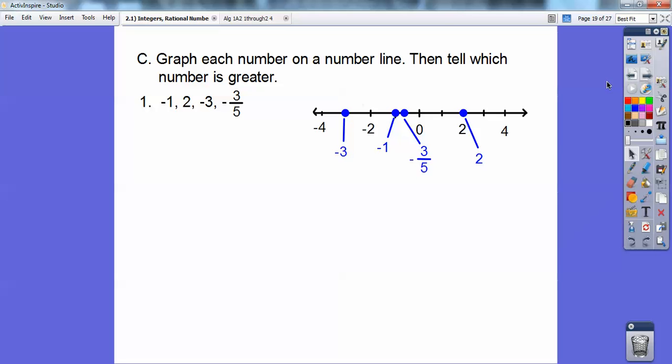Once you have them graphed, this is the order. This is the smallest number, this is the next smallest number, this is the next smallest number, this one's the biggest number. Negative three-fifths is bigger than negative 1. Negative 1 is bigger than negative 3. When they're on the number line, that tells you which one's bigger right there.